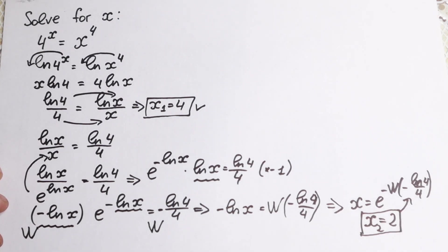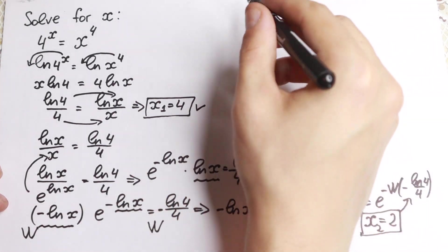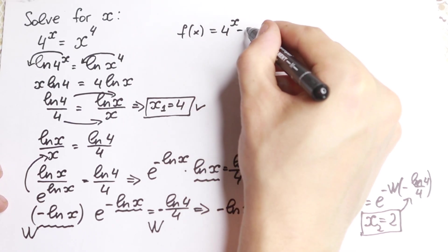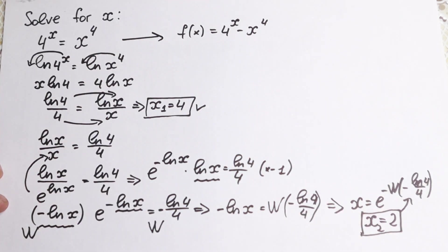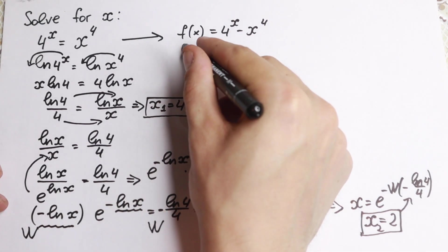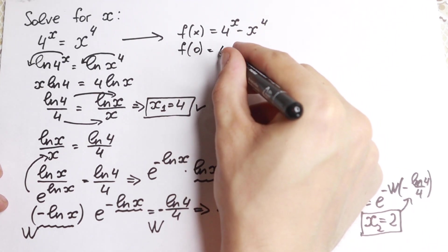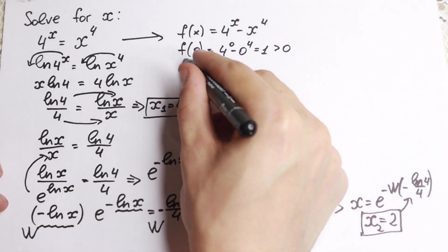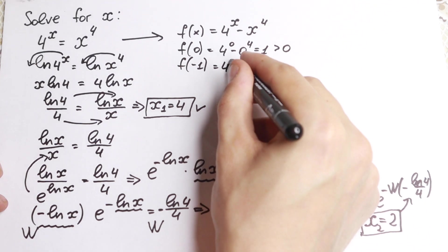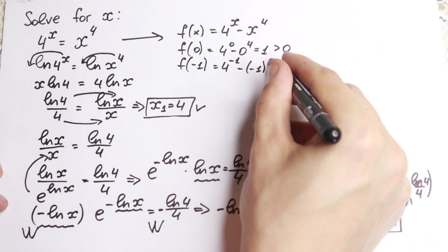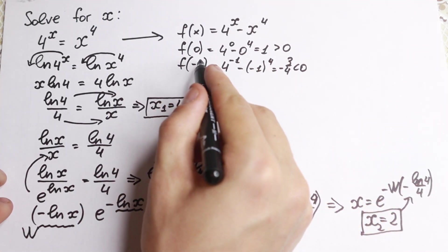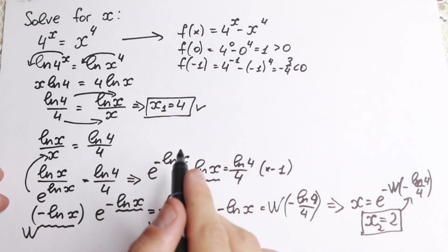What are we going to do next? Let's find more roots. I want to show you one really interesting moment. If we create a function f(x) equal to 4 to the x minus x to the 4, we can evaluate it at certain points. At x=0: 4 to the 0 minus 0 to the 4 equals 1, which is greater than 0. At x=−1: 4 to the power minus 1 minus (−1) to the fourth power equals minus three-fourths, which is negative. Since we have different signs, there will be one solution between −1 and 0.